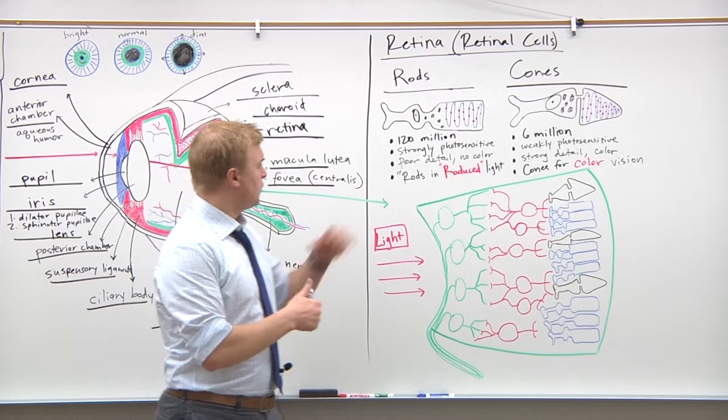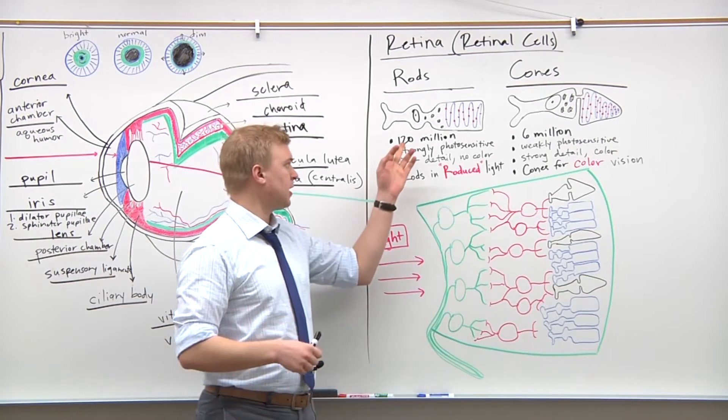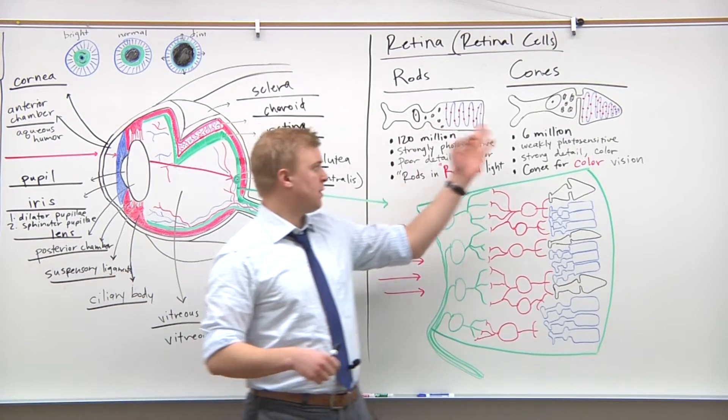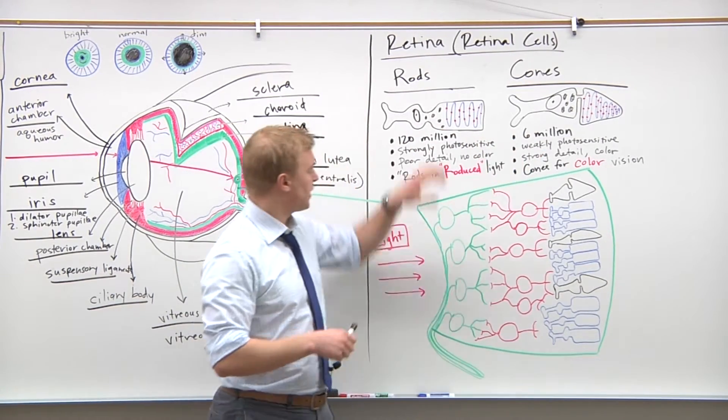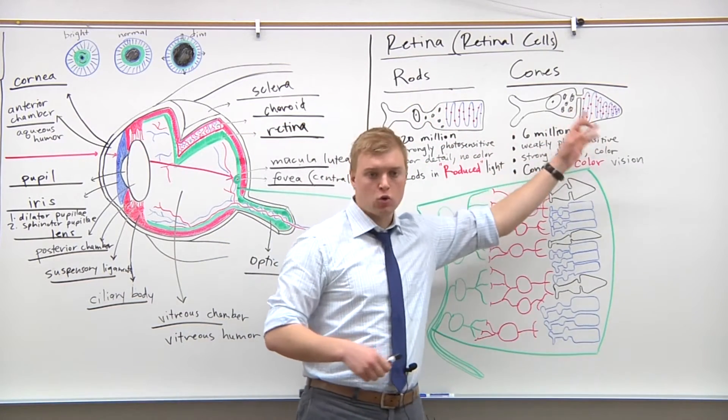Just a few differences I wrote up here between rods and cones. Rods: there's about 120 million compared to about 6 million cones, and you can see the shape here. We have more of a rod-like structure here, and more of a cone-like structure there.